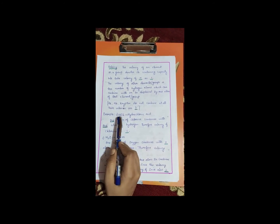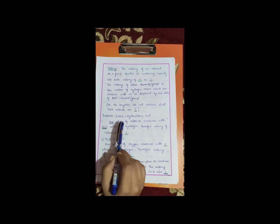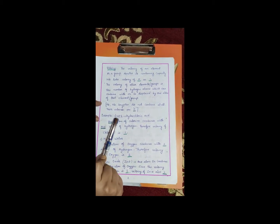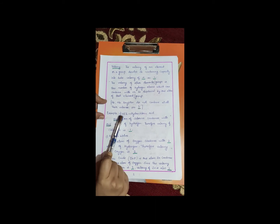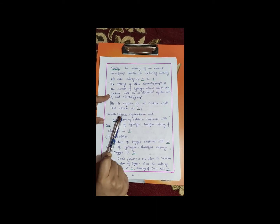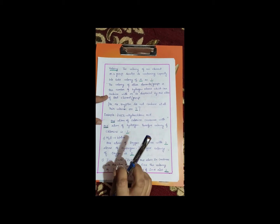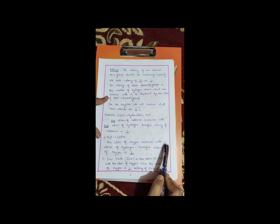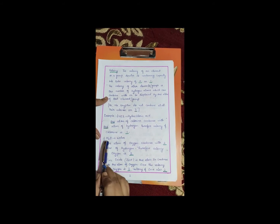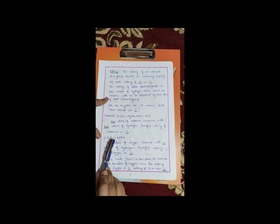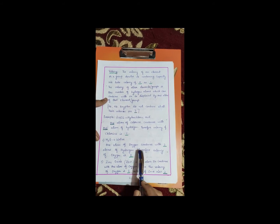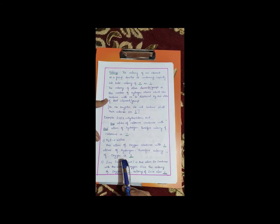Let's take an example. In hydrochloric acid, one atom of chlorine combines with one atom of hydrogen. Therefore, the valency of chlorine is one. In H2O, one atom of oxygen combines with two atoms of hydrogen. So the valency of oxygen is two, and the valency of hydrogen is one.